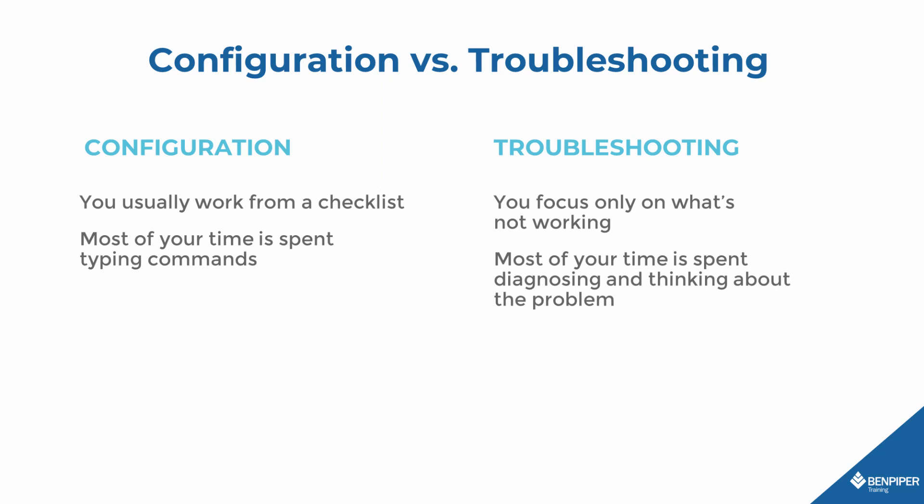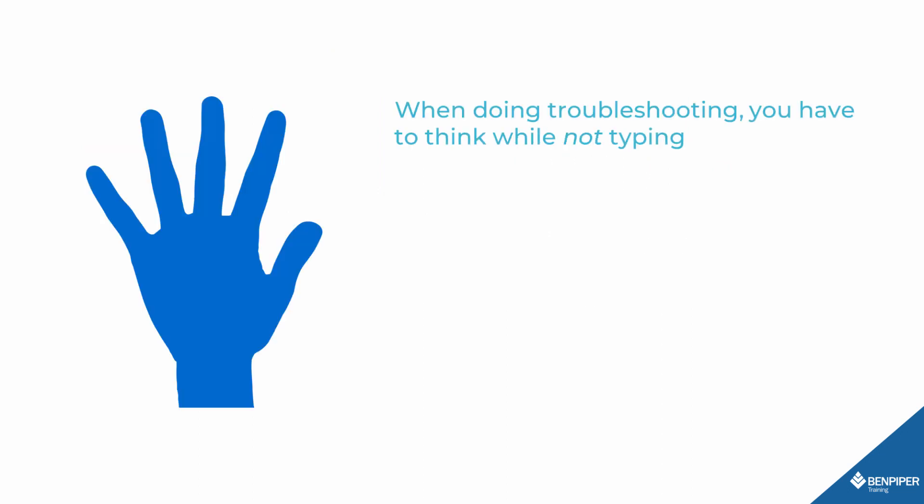The specific tasks you perform when troubleshooting are very much unlike the tasks you perform when doing a configuration. When doing a configuration, most of your time is spent banging out commands at the command line. When doing troubleshooting, most of your time is spent diagnosing and thinking about the problem. It's only after you have a good idea of the cause that you actually start making changes at the command line. If you tend to think with your fingers, that's great for configuration but terrible for troubleshooting, because you have to think while looking at topology diagrams, playing out scenarios in your head, writing down notes, and reading output. Practice troubleshooting — that is what's going to prepare you for the practical aspect of the exam more than anything else.